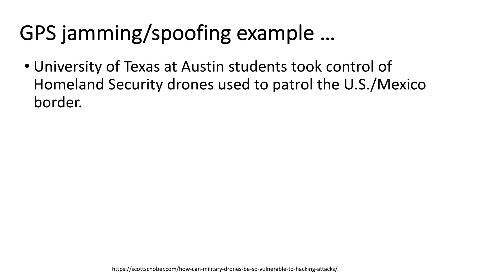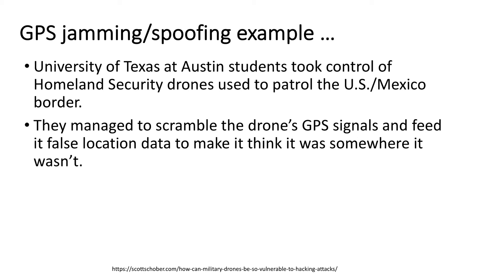Let's look at an example closer to home. A few years ago, some University of Texas at Austin students were doing work with drones and wanted to test the drones being used by U.S. Border Patrol on the U.S.-Mexico border. Homeland Security uses these drones to check for illegal crossings or drug smuggling. They went down to the border and were able to scramble the drone's GPS signals and feed it false location data — that is, GPS spoofing — to make it think it was somewhere it wasn't. These attacks, while seemingly theoretical, have actually been used in the real world.